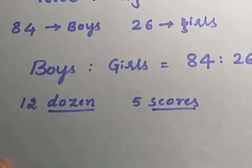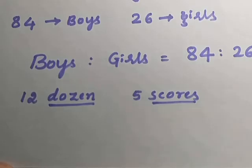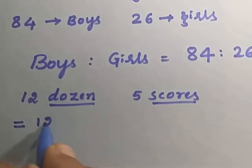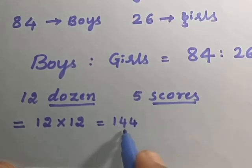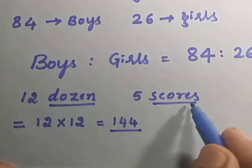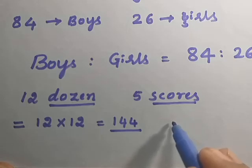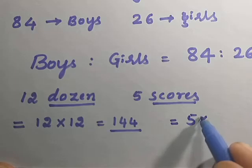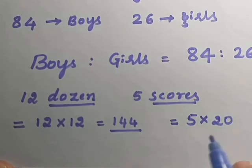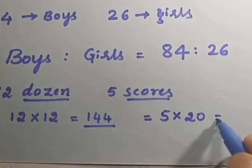Let us now calculate how many units are there in 12 dozen. 12 dozen means 12 into 12, that is equal to 144 articles. In case of 5 scores, this is equal to 5 into 20, 1 score means 20 articles. This will give us 100 articles.